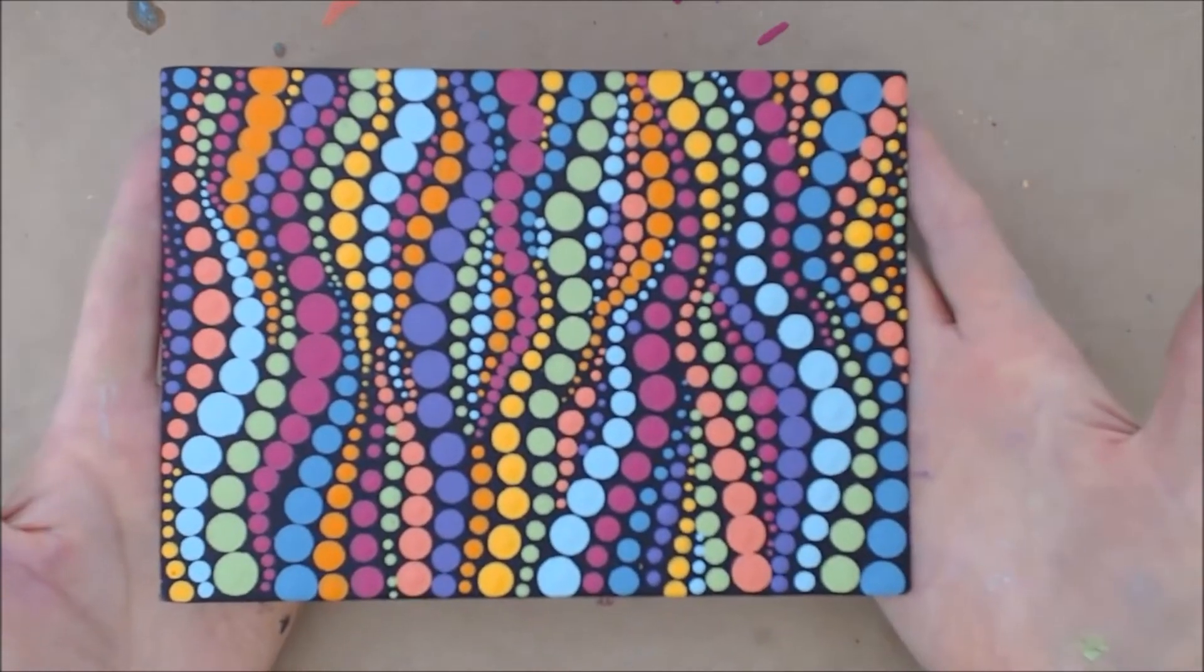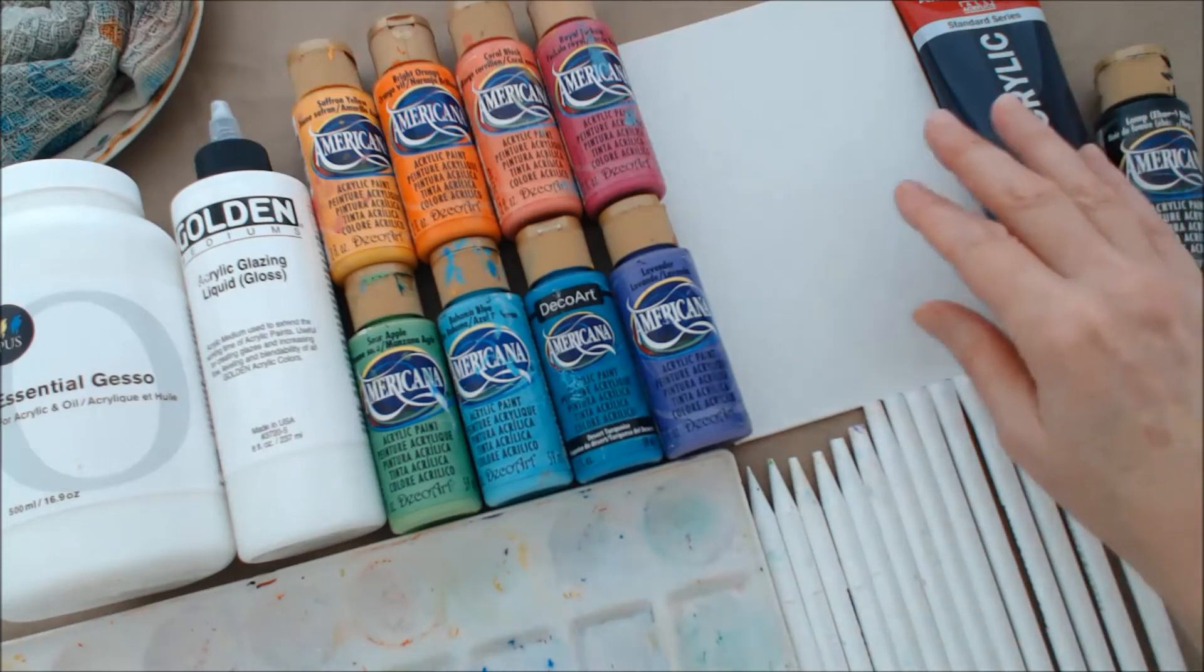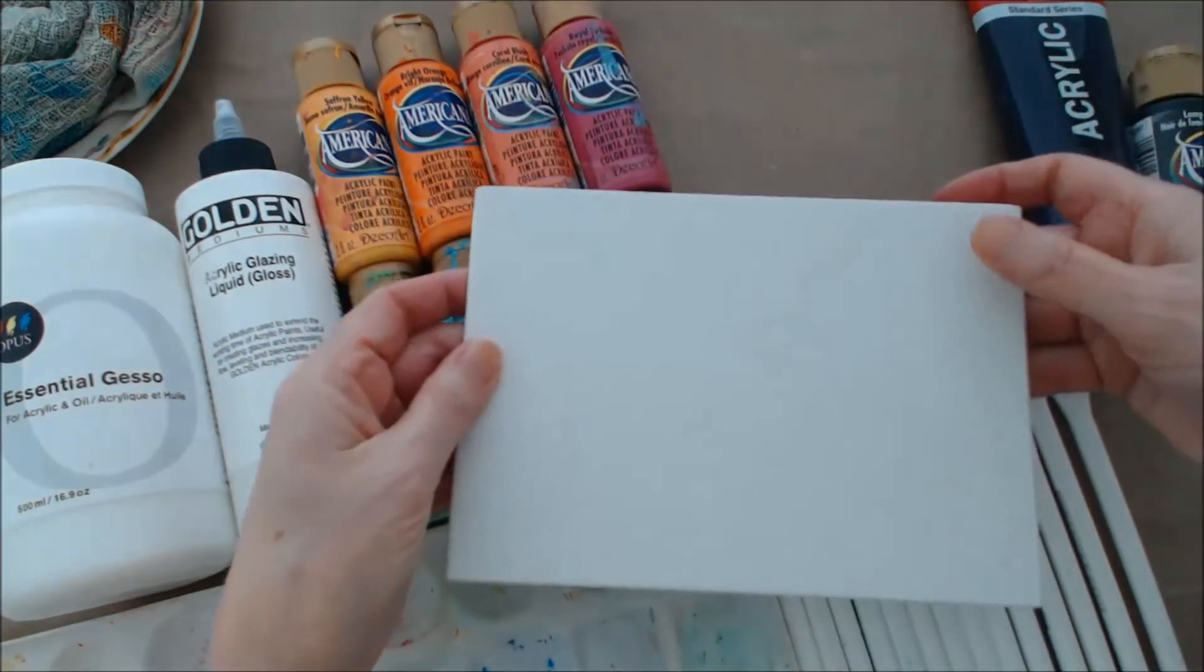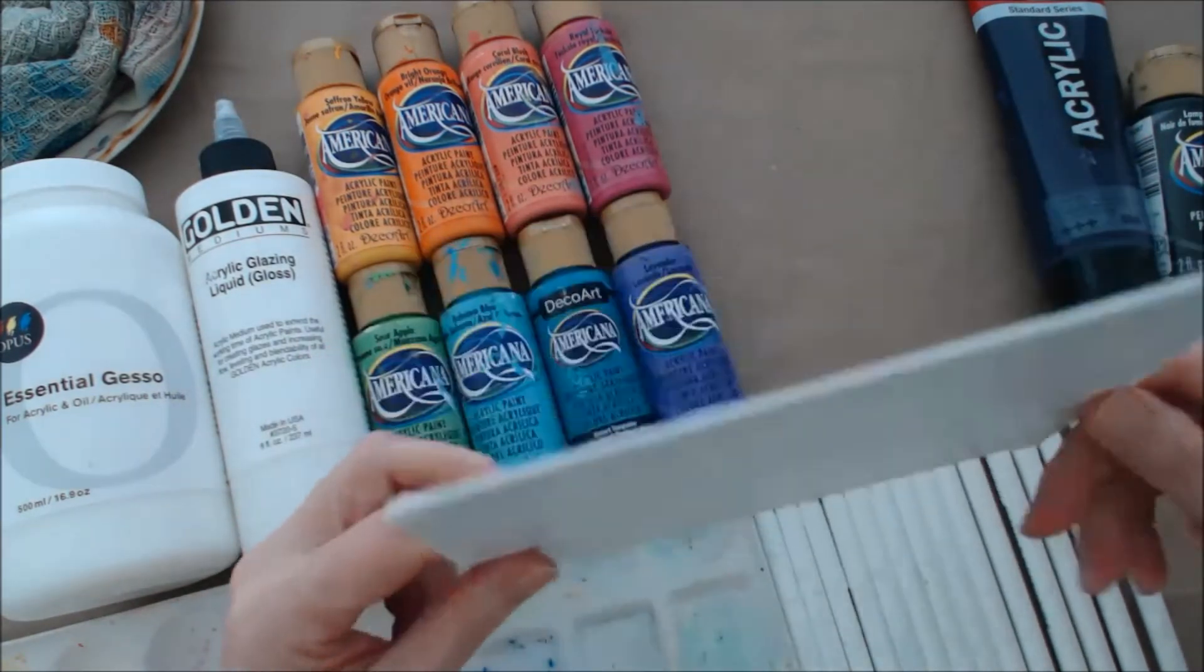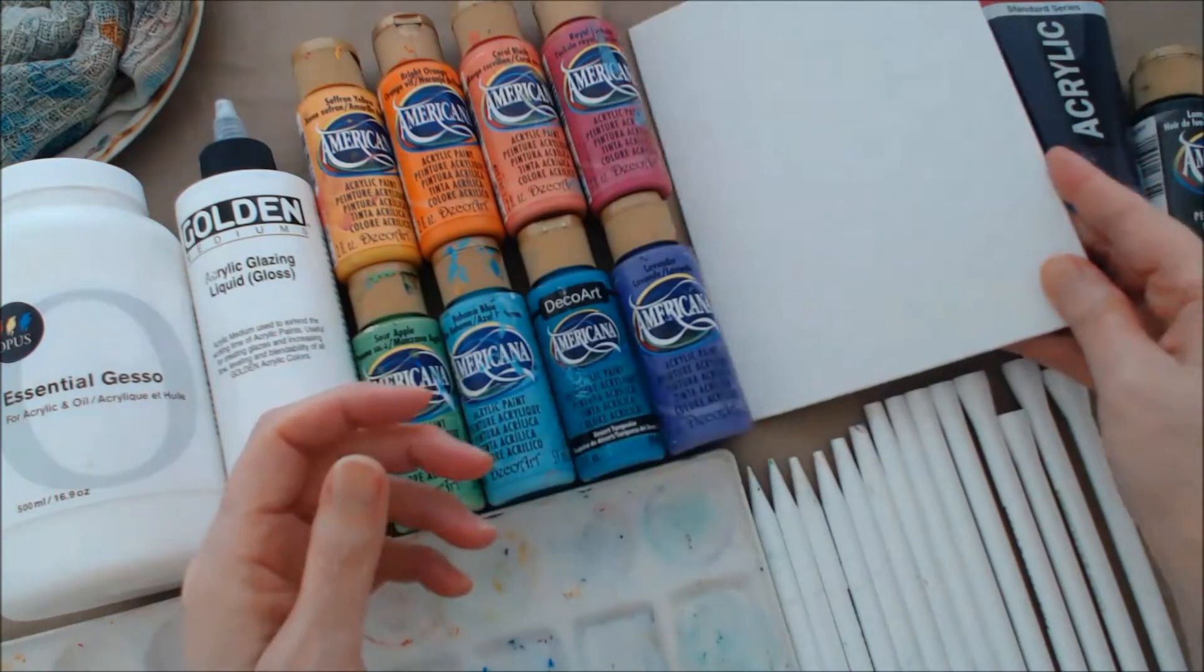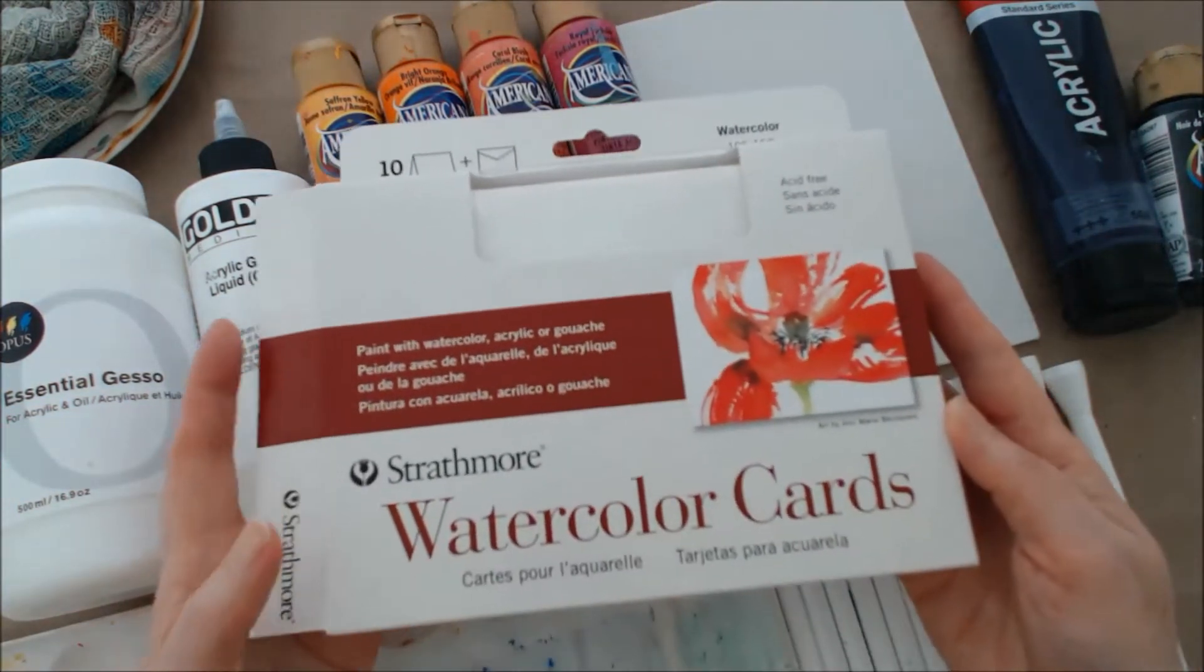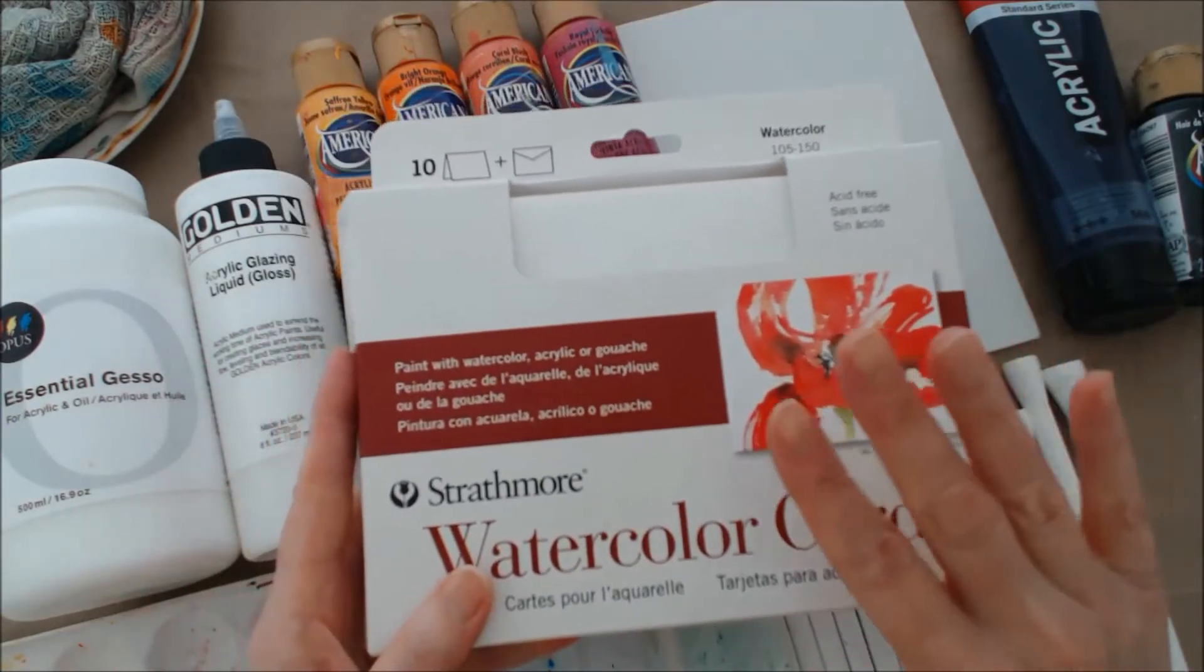The supplies you're going to need for this project: first of all, you'll need a paint surface of some sort. I'm just using a canvas board, a five by seven piece. You could paint on art paper or on cardstock if you like. These cards are really nice to paint on.